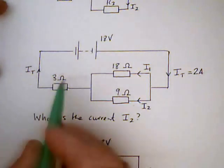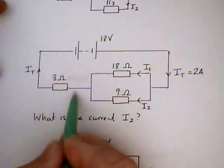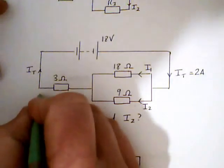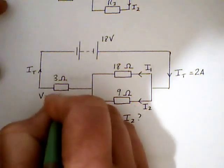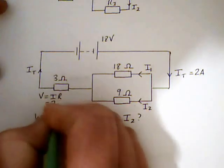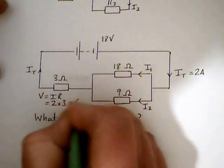Now that helps us instantly because we can now say that the voltage across the 3 ohm resistor is also given by Ohm's law, V equals IR equals 2 times 3 equals 6 volts.